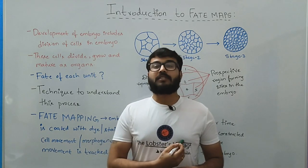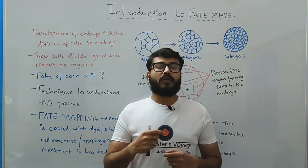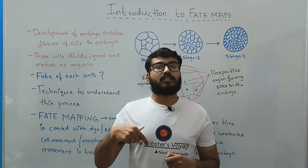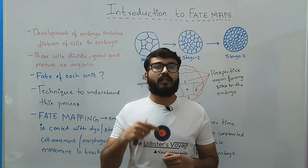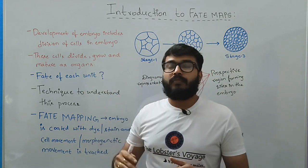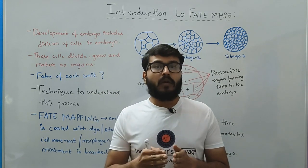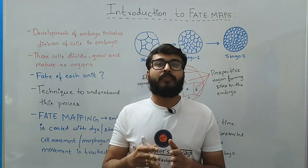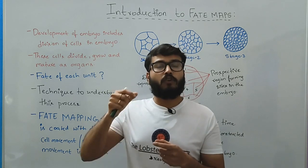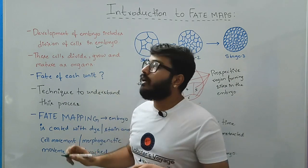Hello, welcome to the Lobster's Voyage. In this video I'll introduce you to fate maps. If you are looking for the fate map of chick embryo or the fate maps of frog embryo, the link is provided in the description below. Basically, any organism once it undergoes the process of fertilization, a zygote is formed and the zygote keeps on dividing continuously to form respective cells, and each cell forms an organ in the coming days.